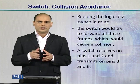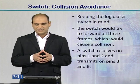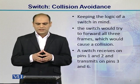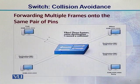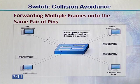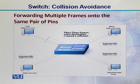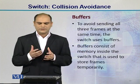If the switch forwards all frames to Fred's direction, we know a switch receives on pins 1 and 2 and transmits on pins 3 and 6. In this diagram, Barney, Betty, and Wilma are all communicating simultaneously, sending frames towards Fred. When the switch receives these frames and analyzes the destination address, port E0 will try to send all three frames at once, resulting in a collision. How do we avoid this kind of collision?